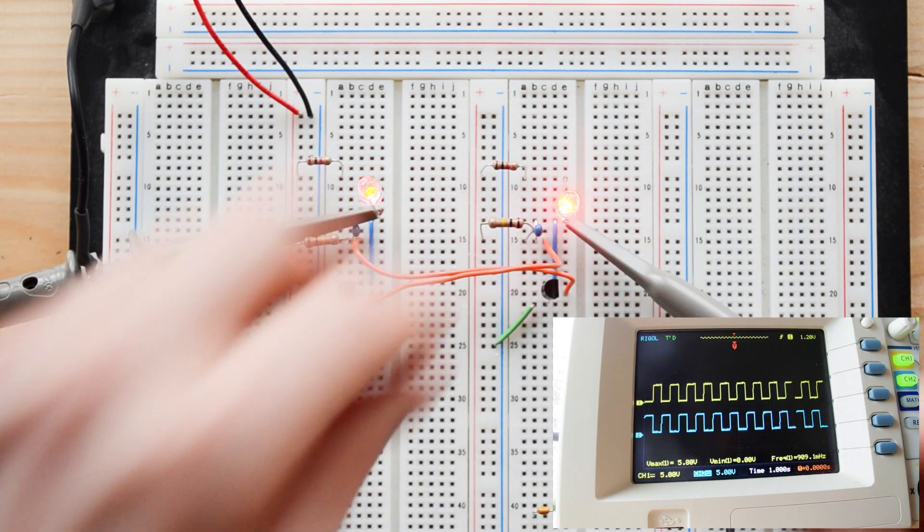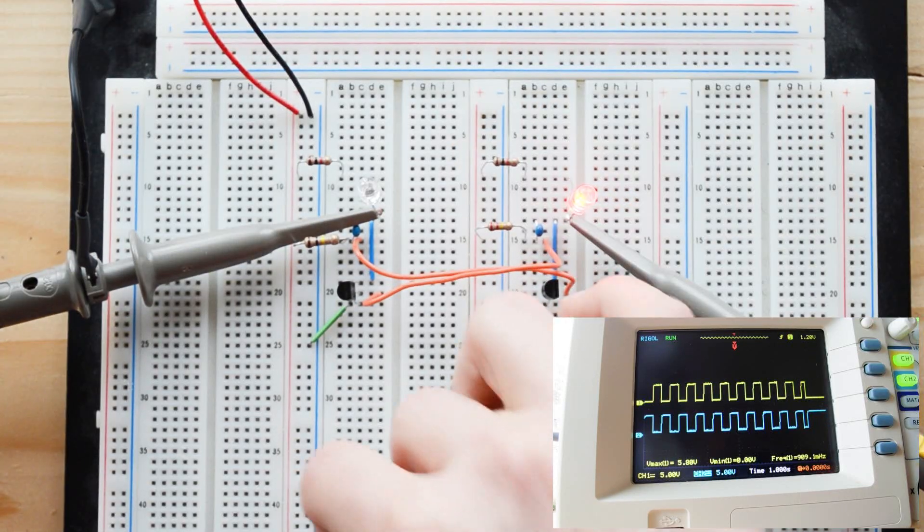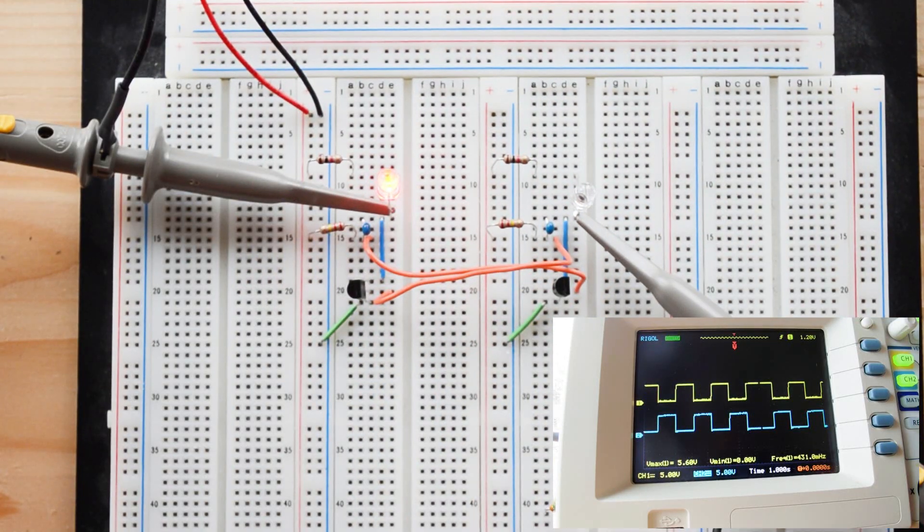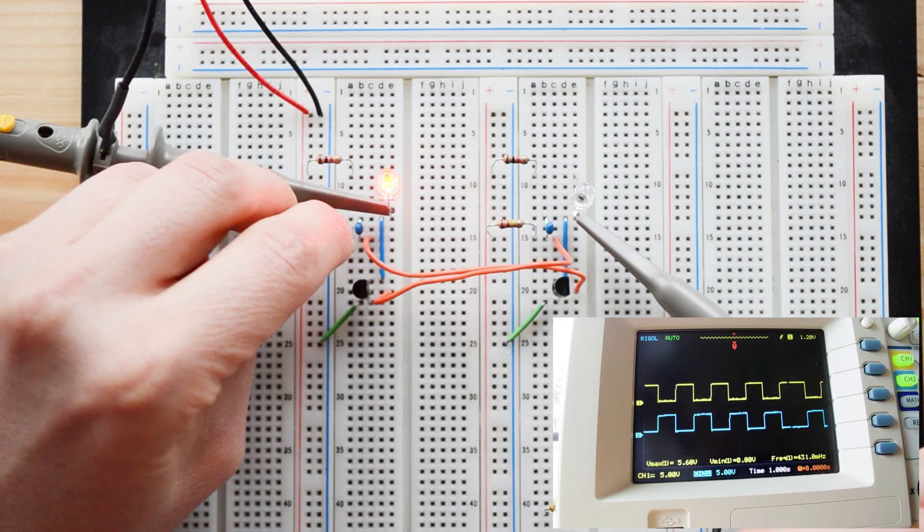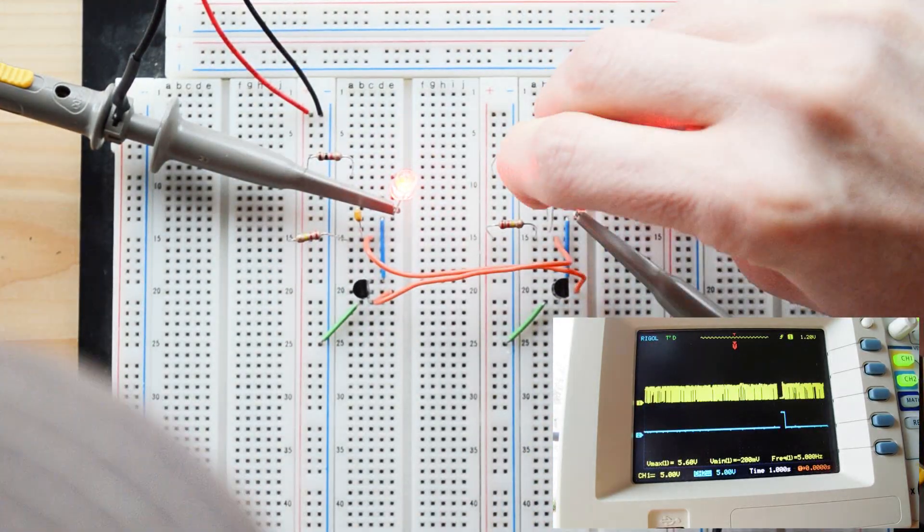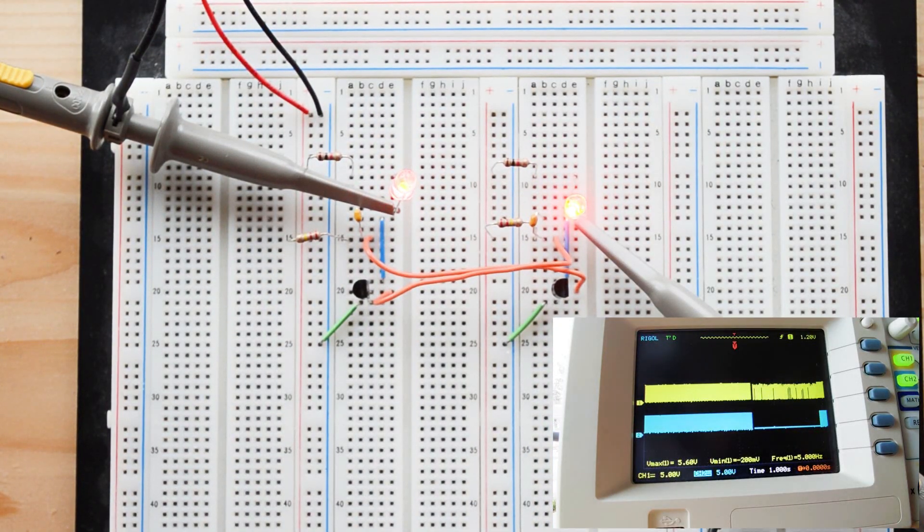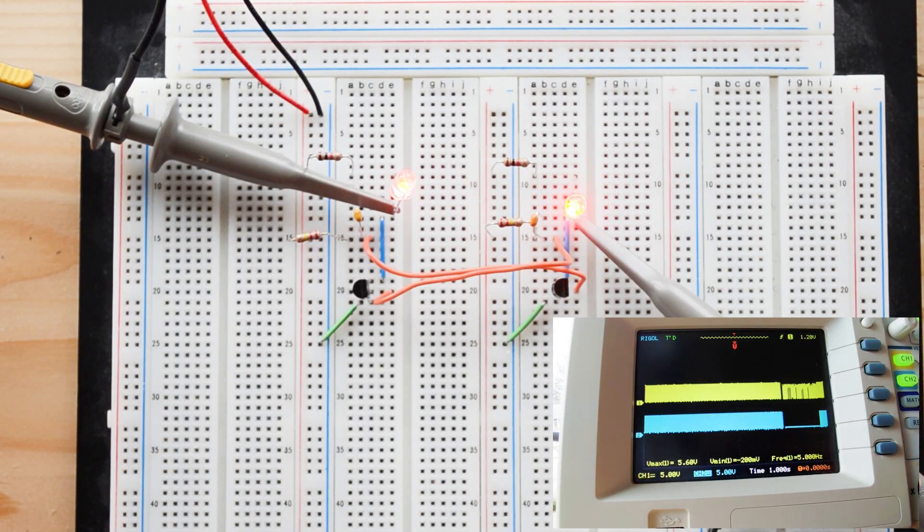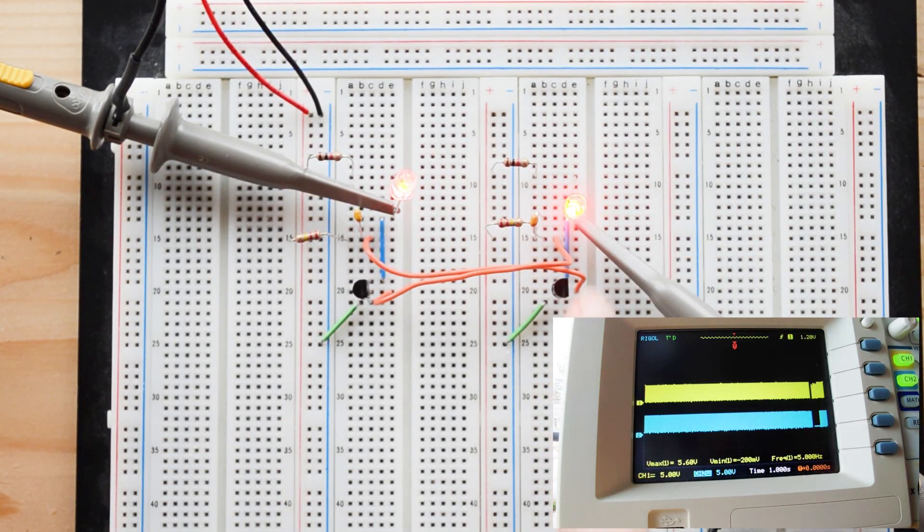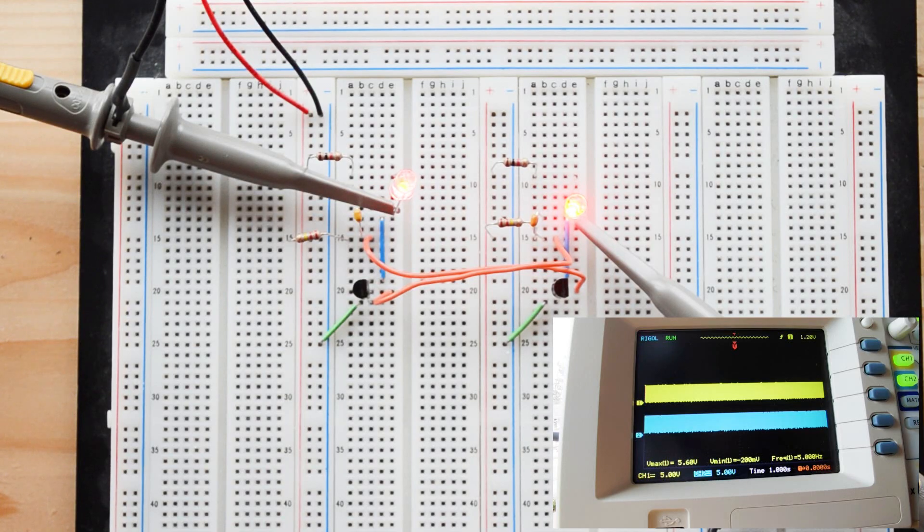So now I'm going to switch it back to the 220K ohm resistors. And instead this time what I'm going to do is I'm going to switch out the capacitors. So I've just switched these out to 0.1 microfarad capacitors and they're blinking so fast that you might not even be able to tell on the camera that they are blinking at all.